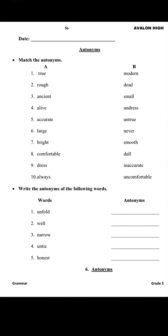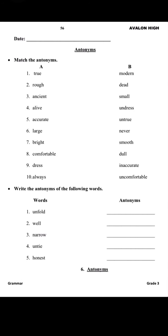Number one: 'true' — what is the opposite, what is the antonym of 'true'? Untrue, yes. You have to match it. Rough, smooth. In the same way you will match column A with column B.